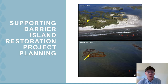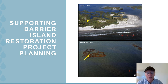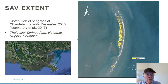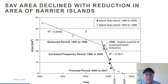Finally, the last example is the Chandelier Islands, moving to a barrier island setting. The two photographs show before and after Hurricane Katrina, illustrating that storms are very important in structuring these islands and the seagrass habitats. An image shows the extent of seagrass in 2010 — they are diverse, in fact hosting the only Thalassia meadows along about a thousand kilometres of the northern Gulf of Mexico.